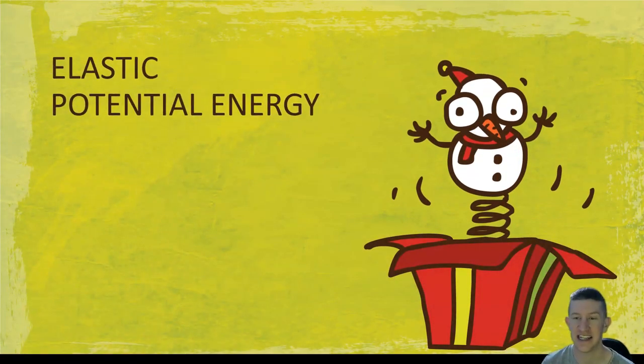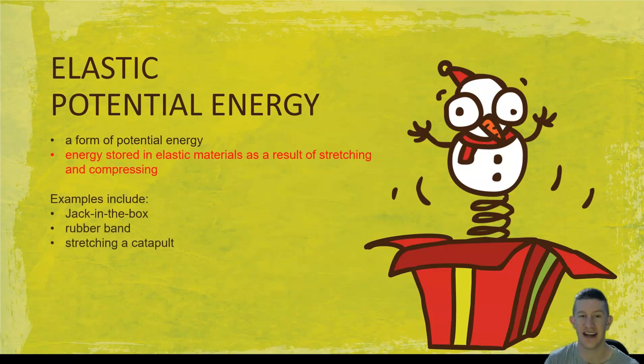Another type is elastic potential energy, a different type of potential energy. It's energy stored in elastic materials as a result of stretching and compressing. Examples include a jack-in-a-box, a rubber band, and stretching a catapult.